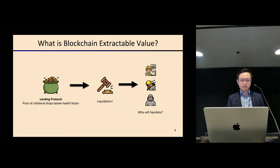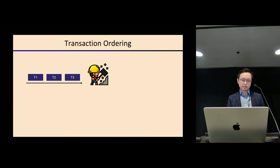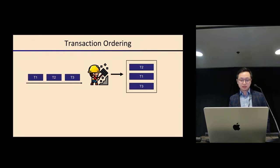One thing that's really important to understand is how transactions are ordered, because this determines who will be the winner for the BEV extraction opportunities. In this particular example, let's say we have three transactions T1, T2, and T3, received by the miners in this exact order. Can anyone tell me why transaction 3 is received first but actually mined as the last transaction in the next block? Does anyone know?